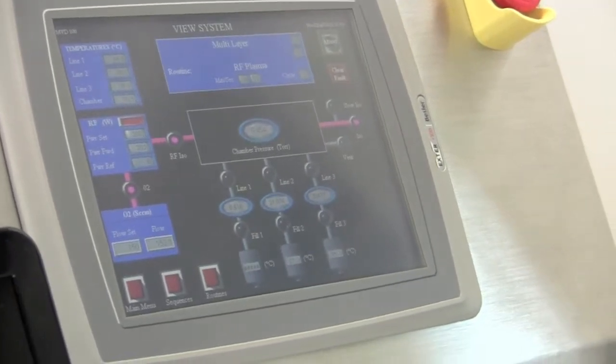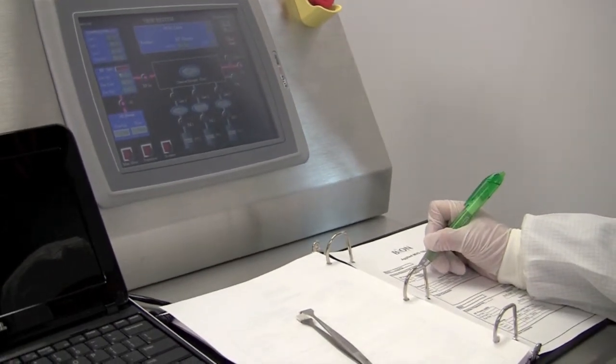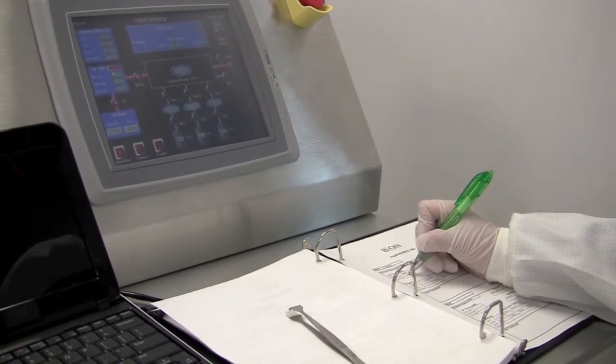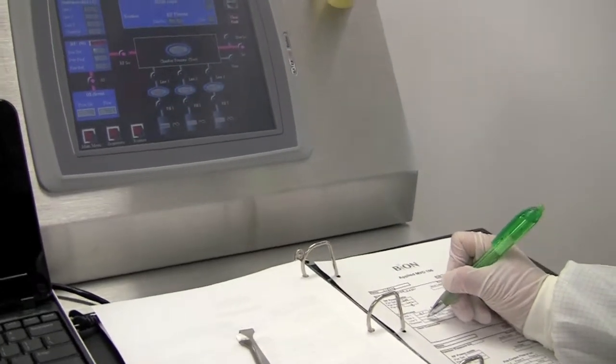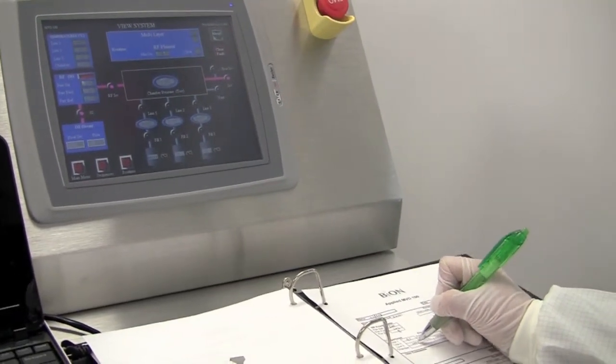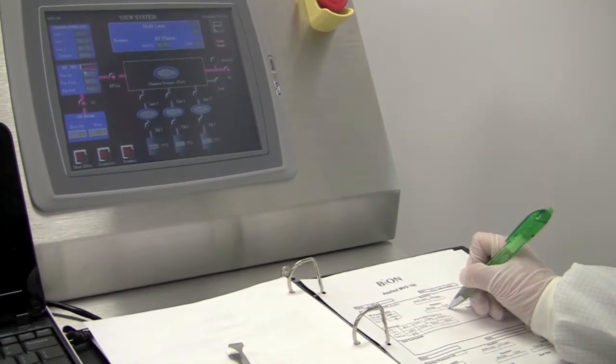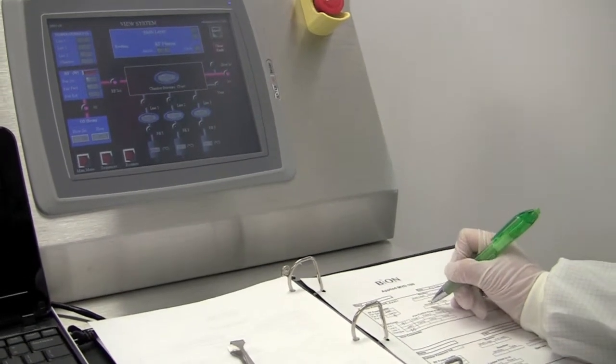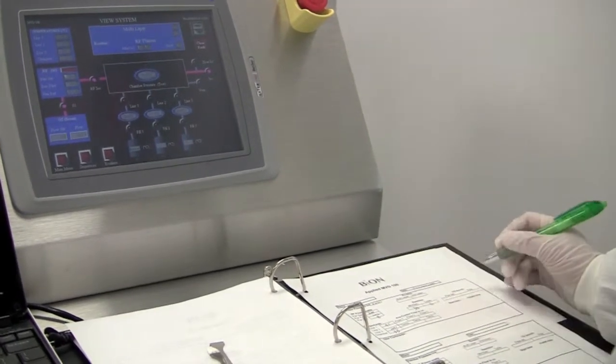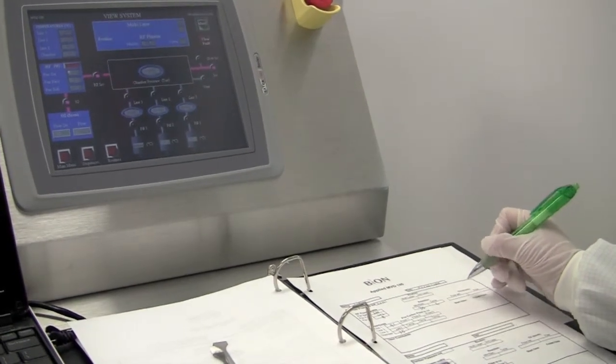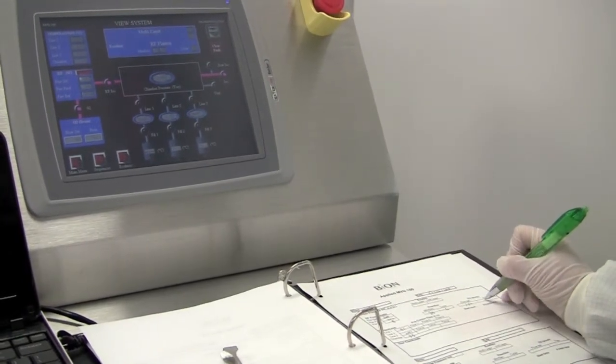So during that time, you write down the information of the RF power and also the temperatures for line one and line three, and the chamber temperature, and also write down how many reaction cycles and the time for each cycle, and also the flow rate of the oxygen. This is 150, 152.